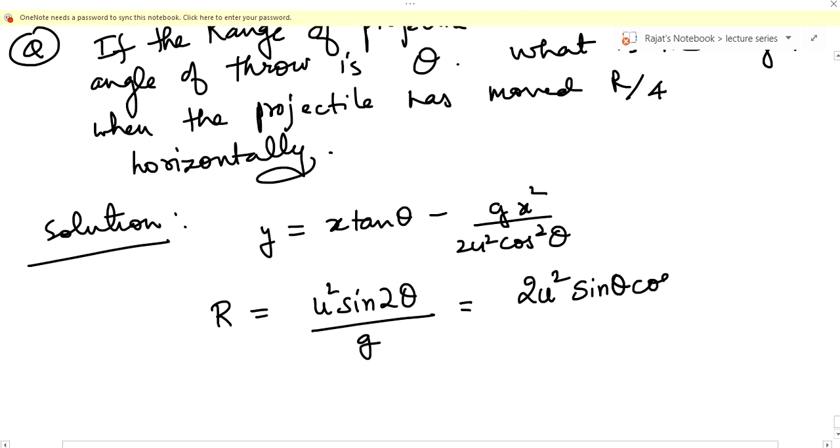Just think about it: if I multiply one cos theta on left hand side and right hand side, what I get is cos theta R equals 2 u squared sine theta cos theta upon g. So 2 u squared cos squared theta upon g into sine theta.